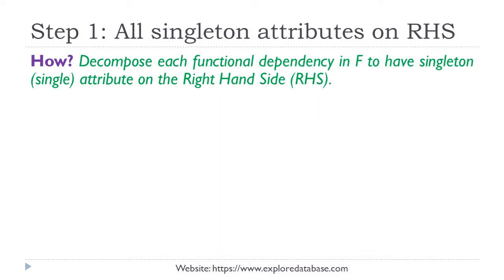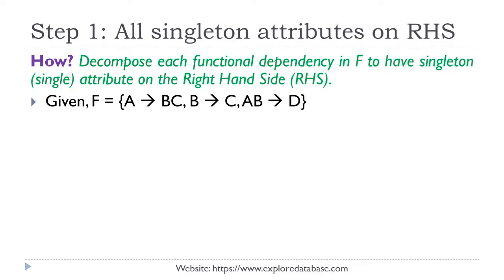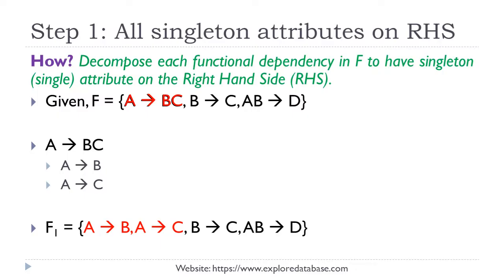In Step 1, we decompose any functional dependency that has more than one attribute on its right-hand side in order to have exactly one attribute. Let us compute the minimal cover for the set f given here. Among the functional dependencies given, only a→bc has more than one attribute on its right-hand side. By applying the decomposition rule, we can decompose this into a→b and a→c. We do this for all FDs with multiple RHS attributes. As a result of Step 1, we arrive at the set of functional dependencies f1, which will be used for computing the minimal cover.